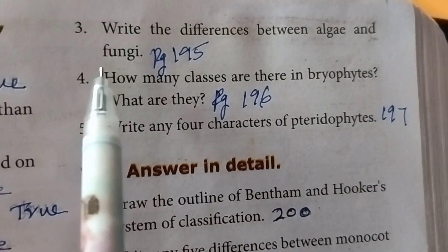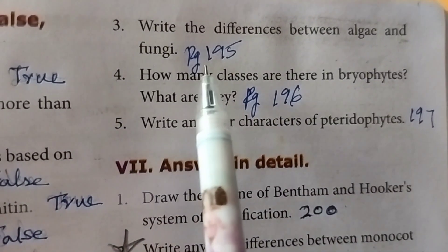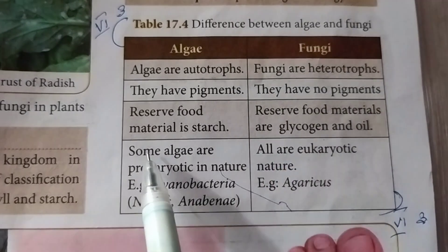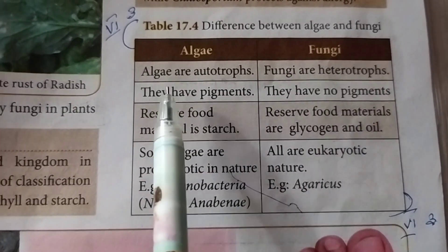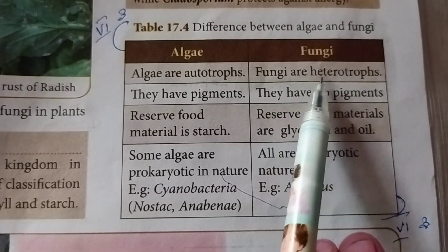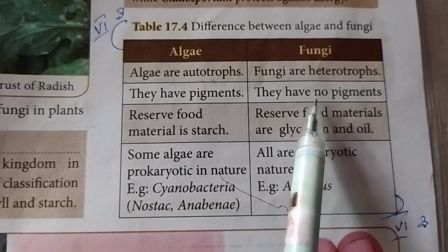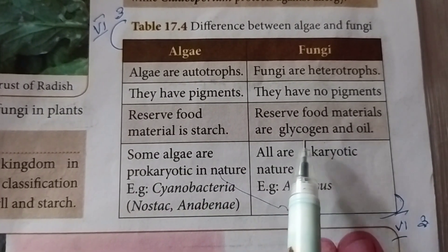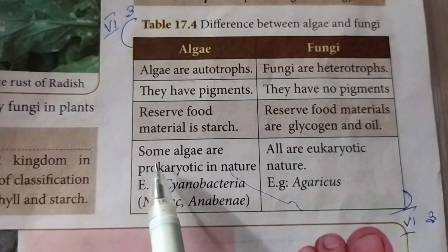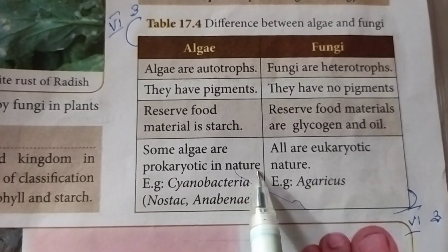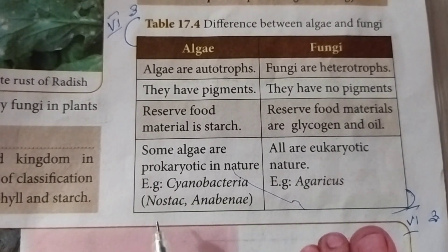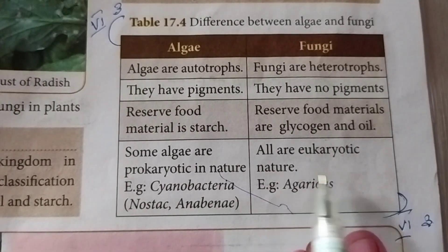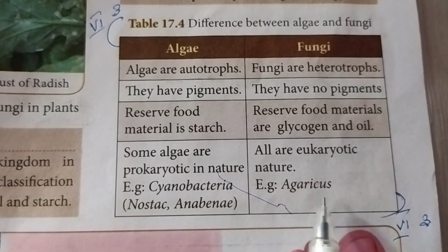Third question: write the difference between algae and fungi. Page number 195. Difference between algae and fungi: algae are autotrophs; fungi are heterotrophs. Algae have pigments; fungi have no pigments. Reserve food material in algae is starch; in fungi it is glycogen and oil. Some algae are prokaryotic in nature, for example Cyanobacteria, Nostoc, Anabaena. All fungi are eukaryotic in nature, for example Agaricus.